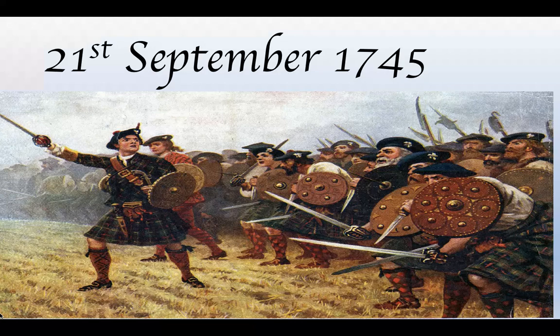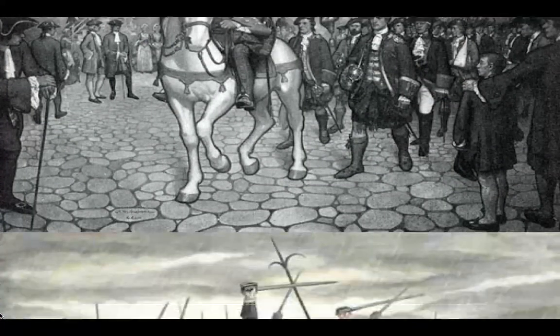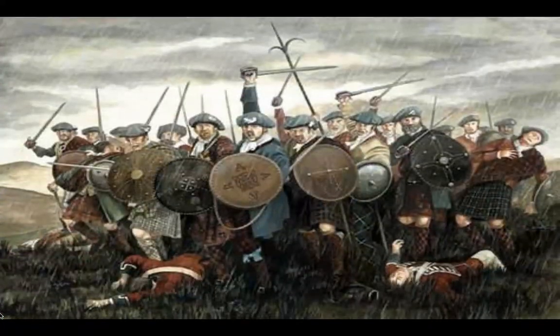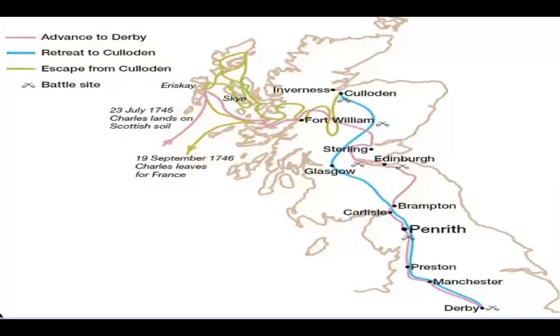He raised the Jacobite standard at Glenfinnan. On 21st September 1745, Charles Edward Stewart and the Jacobites met the British at the Battle of Prestonpans, capturing Edinburgh. After capturing Edinburgh, he invaded England, and the Jacobites reached as far as Derby, which is only 100 miles from London.